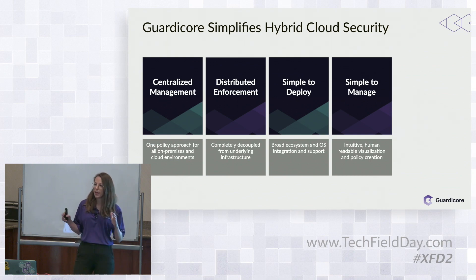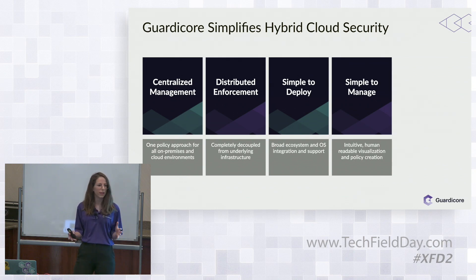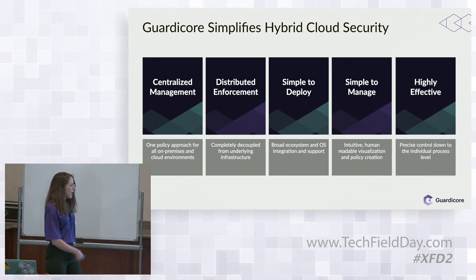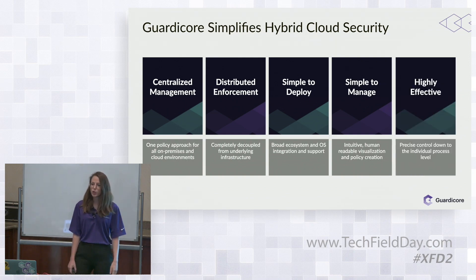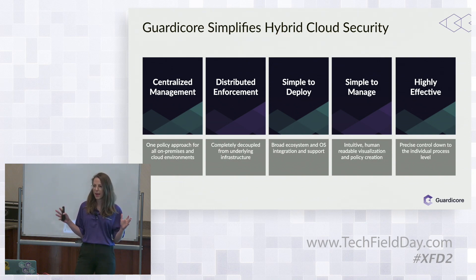Moving forward — simple to manage. A single pane of glass to control your whole data center, a single view that's also intuitive — a human lens. It's not a log of all your connections. What we're going to show you in the next session is a map of everything going on in your data center. You'll be able to visualize your data center in the way that you think or speak about it. And it's highly effective — we go down to the most granular level, controlling process level, user identity, and fully qualified domain names, all from a single pane of glass in an intuitive and visible manner.